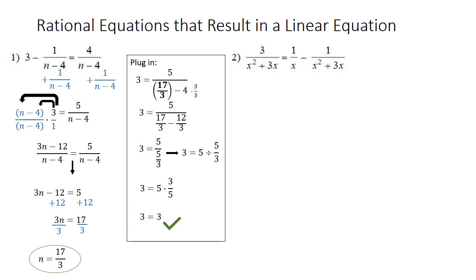Looking at number 2, we need to get the 1 over x squared plus 3x on the other side. So we're going to add it to both sides. And 3 plus 1 is 4. So we have 4 over x squared plus 3x equals 1 over x.